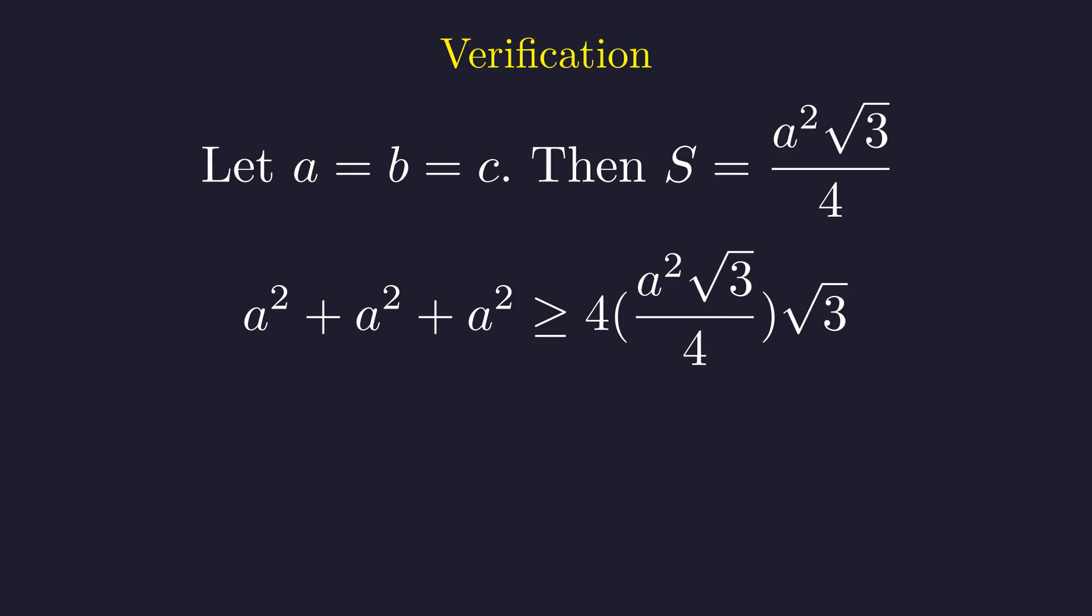Let's do a quick sanity check with an equilateral triangle to make sure everything works out as expected. For an equilateral triangle with side length A, the area S is A squared times square root of 3, all divided by 4.